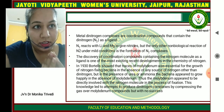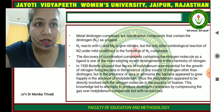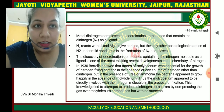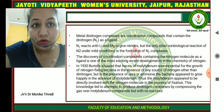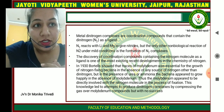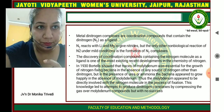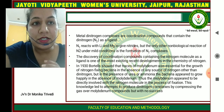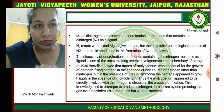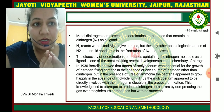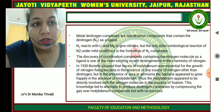The discovery of coordination compounds containing the nitrogen molecule as a ligand is one of the most exciting recent developments in the chemistry of nitrogen. In 1930, it was shown that molybdenum was essential for the growth of nitrogen-fixing bacteria in the absence of any nitrogen source other than dinitrogen, but in the presence of urea or ammonia the bacteria appear to grow happily in the absence of molybdenum. Thus, molybdenum appears to be directly involved with the nitrogen molecule in the process of fixation. This led to attempts to produce dinitrogen complexes by passing the gas over molybdenum compounds, but with no success.